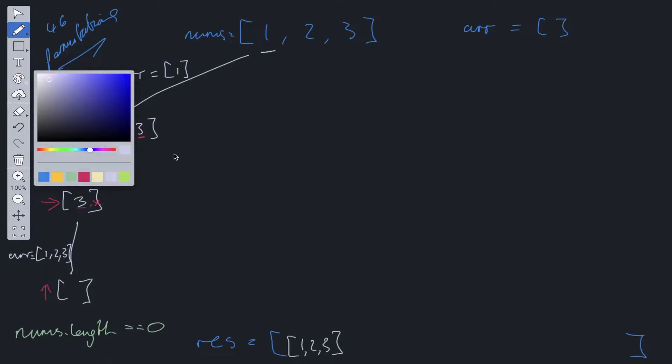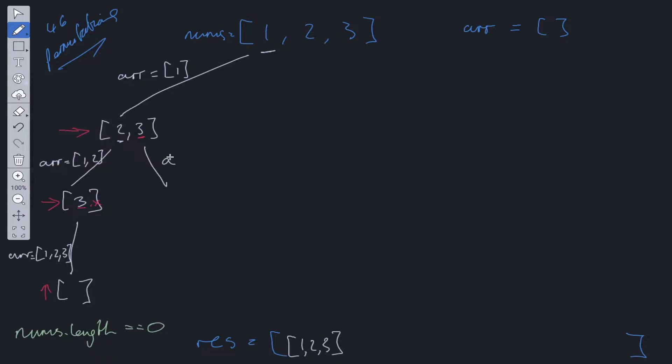So we can recurse down this side. If we take three, we're adding to this value now. One and three. Then what we do is we have two left. We take two. So the array is now one, three, and two because we've pushed two into this array. And then we're left with an empty array.